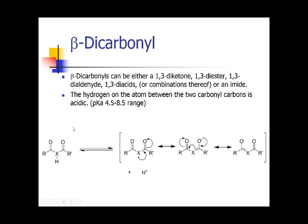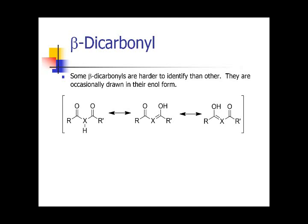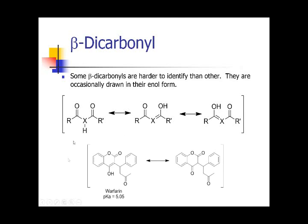Some beta-dicarbonyls are more difficult to identify than others. They sometimes appear in two forms: either as the beta-dicarbonyl, or with one of those ketones drawn in the enol form. A real example is warfarin. These two drawings are the same molecule — you never see warfarin drawn like the molecule on the right; it's always drawn in the enol form because there's more conjugation. Regardless of which form it's drawn in, they both have an acidic proton — here it's right there, and there it's right there. It's the same proton, just drawn in two different resonance forms.